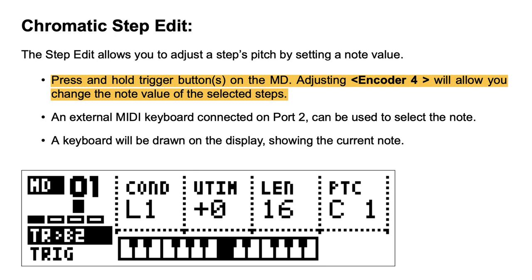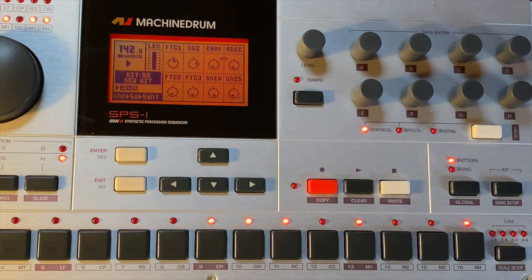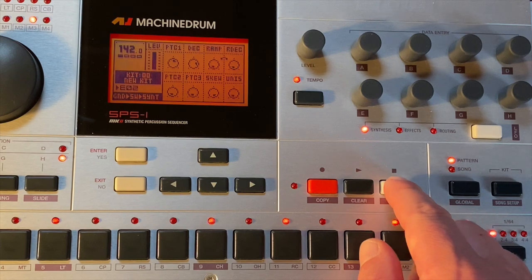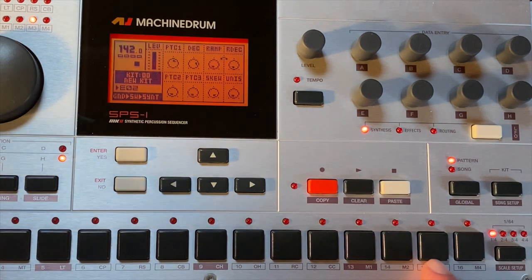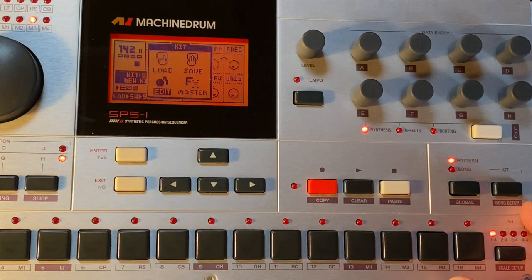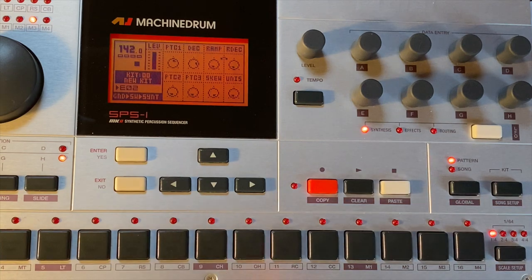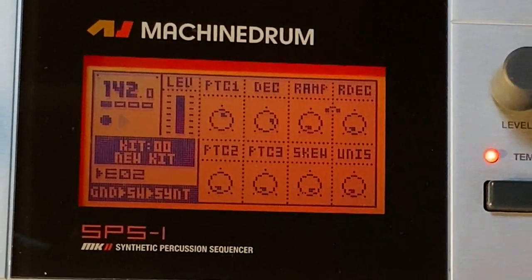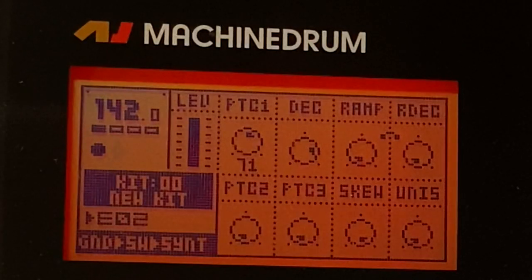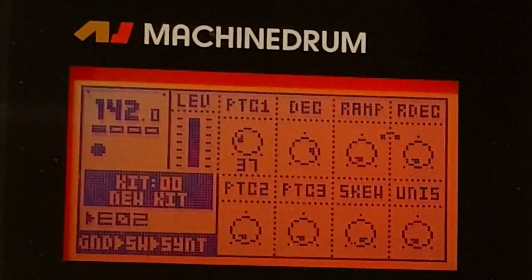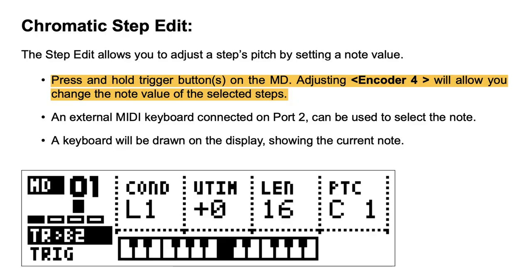The first topic is chromatic step edit, which can be very useful if you have an ongoing beat and you would like to add a ground machine in order to add a bass. Of course you can dial in the pitch manually, but sometimes it's not so easy to match the exact tuning. Here, chromatic step edit is much more convenient.